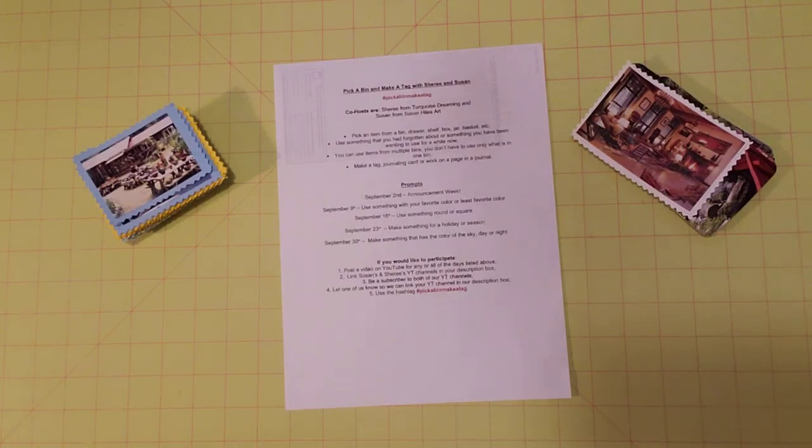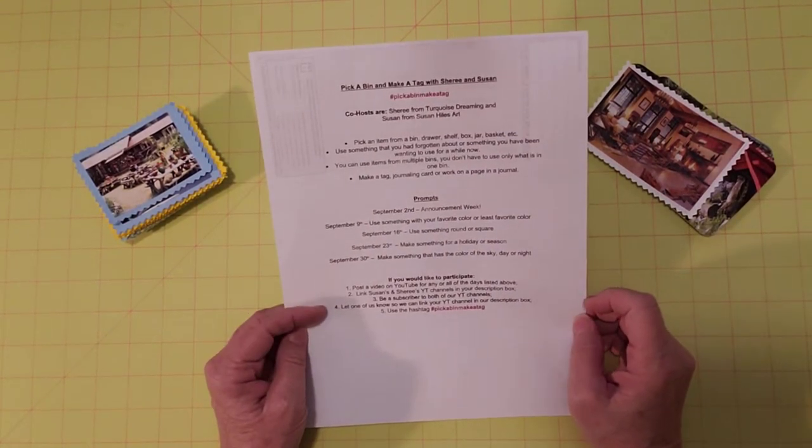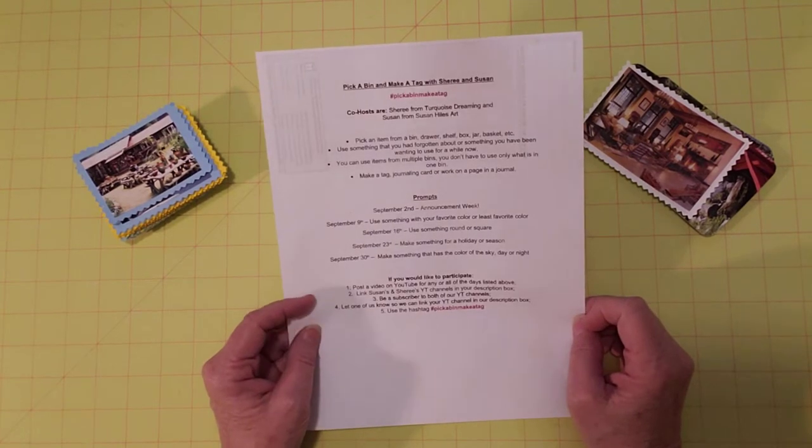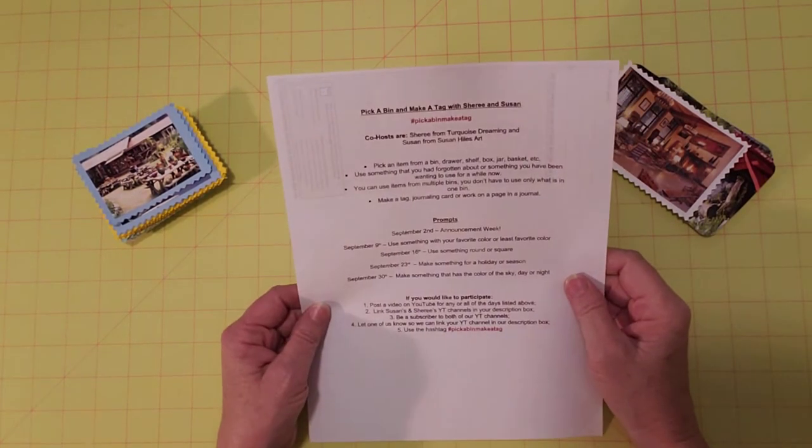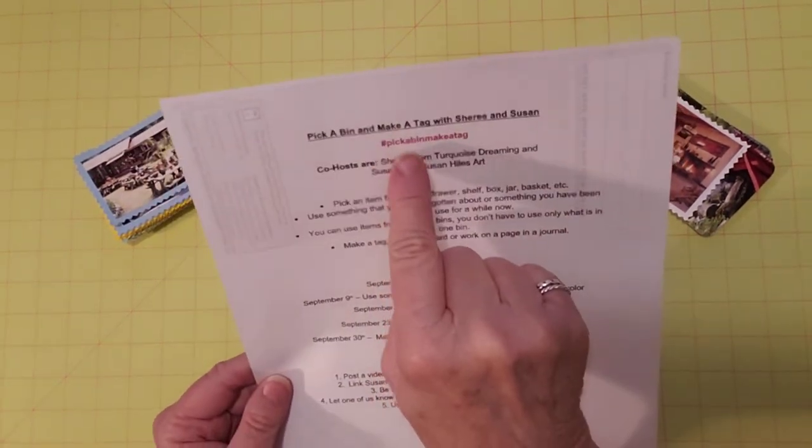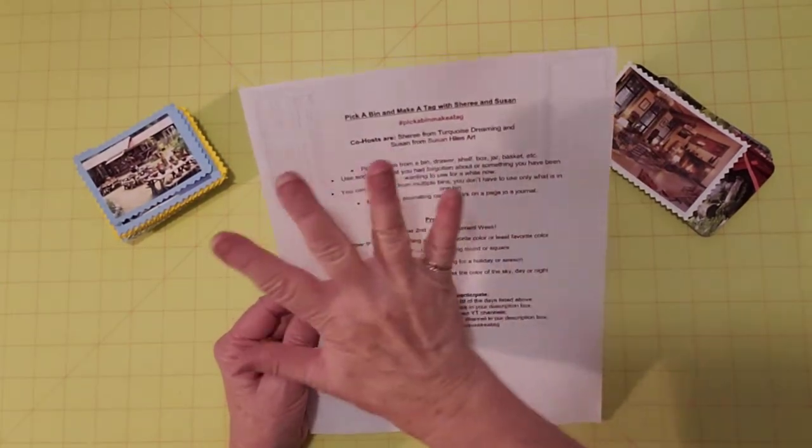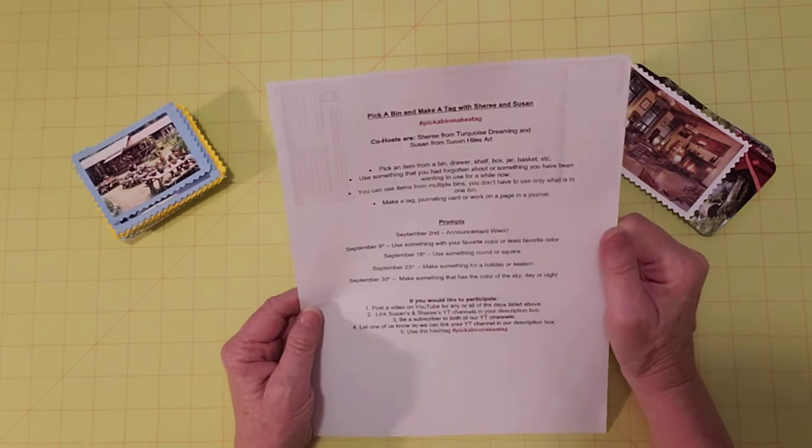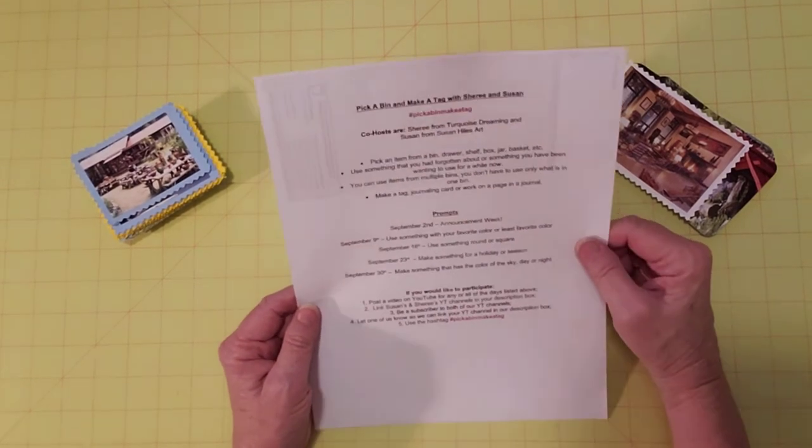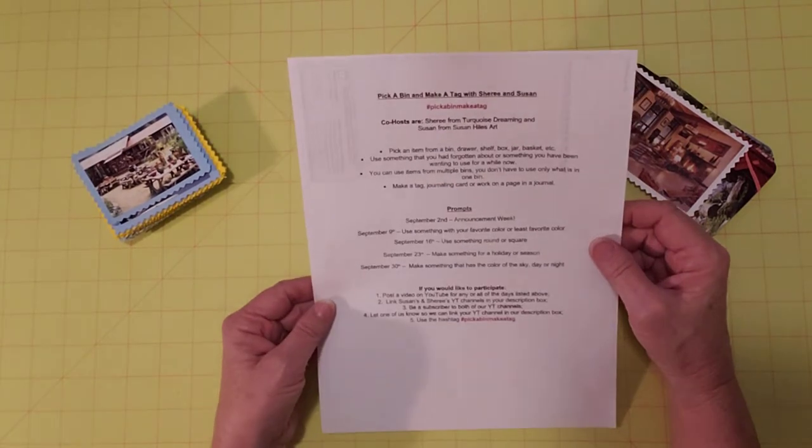Hello friends, it's Sheri from Turquoise Dreaming. How's everyone doing today? I'm here to announce the September collab that Susan and I are co-hosts of. We do a new collab every month, and this month it's called - here's the hashtag right here - pick a bin, make a tag. So it's a little bit long, but if you just remember the words, you just squish them all together and you have your hashtag.